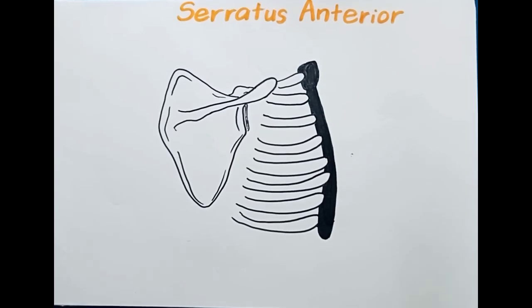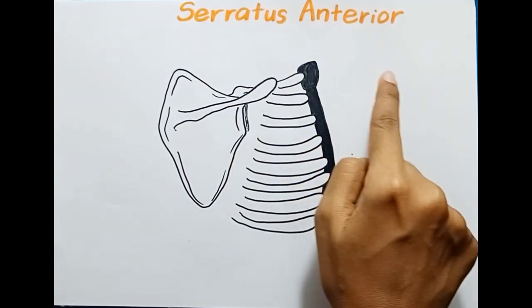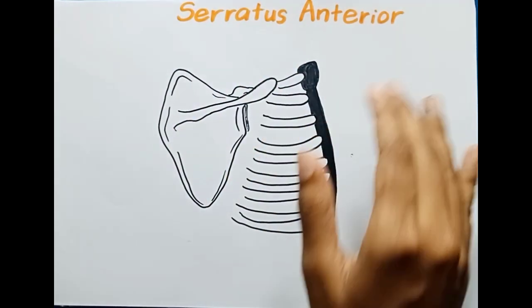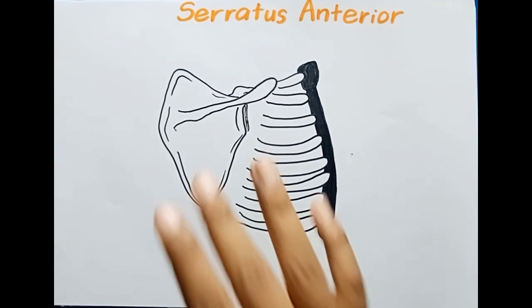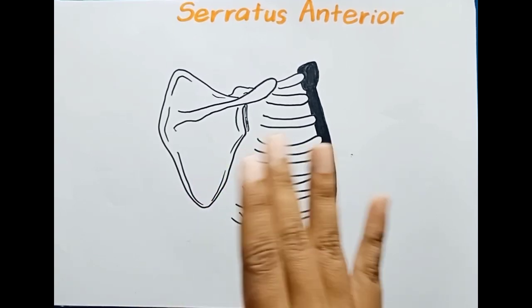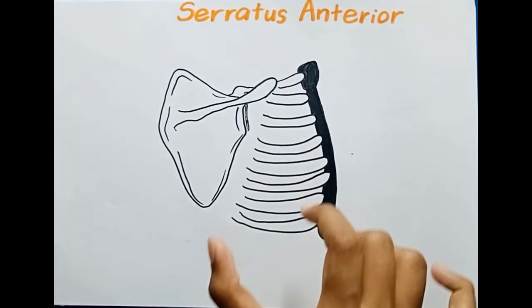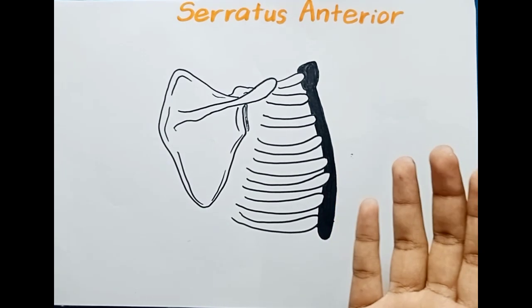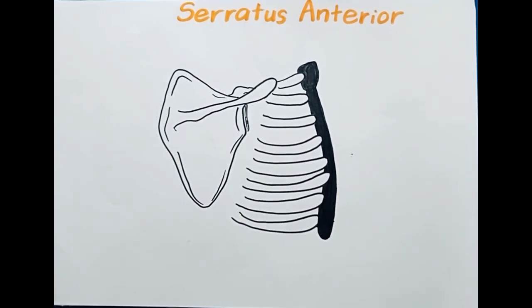Welcome to the Dr. IoTube channel. In this video we are going to talk about the serratus anterior. Serratus anterior is one of the muscles in the pectoral region. This muscle is fan-shaped and lies along the lateral aspect of the thorax — lateral meaning it is far from the medial axis.